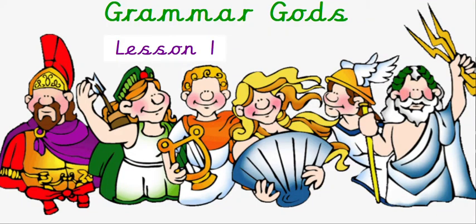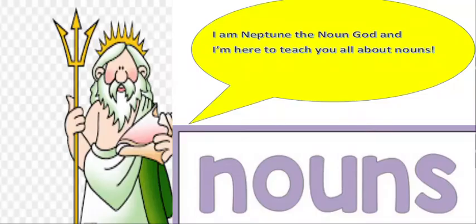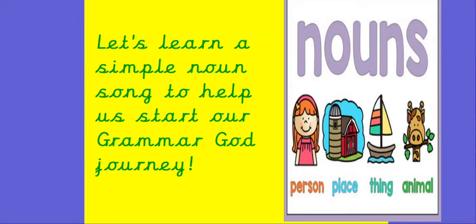Hi everyone, welcome to the Grammar God's first ever lesson. The Grammar Gods know how many different word types you have to learn in Year 2 — you have to know why we use them, what the difference is between them, as well as using them in your own work. They know you have to learn about verbs, adjectives, nouns and many more, and they are here to help you. Neptune the Noun God is here today and he wants to teach you all about nouns. Let's learn a simple noun song to help us start our Grammar God journey.